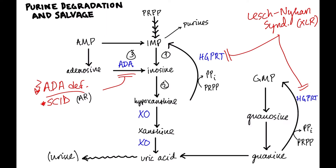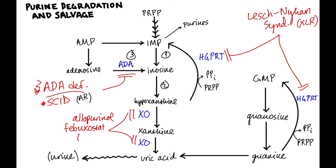Where do drugs really play a role? In gout. Gout can be due to overproduction or under-excretion of uric acid. The idea behind gout drugs is to increase excretion or decrease production of uric acid. One way is by blocking xanthine oxidase. Two drugs do that: allopurinol, which is the older one, and febuxostat, which is on the market under the trade name Uloric.